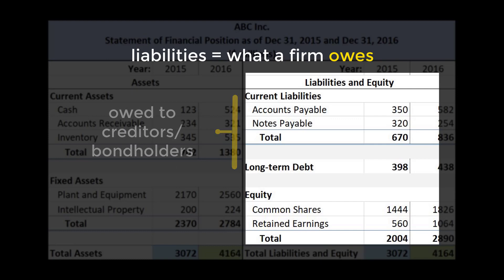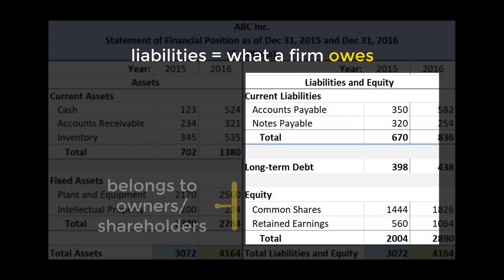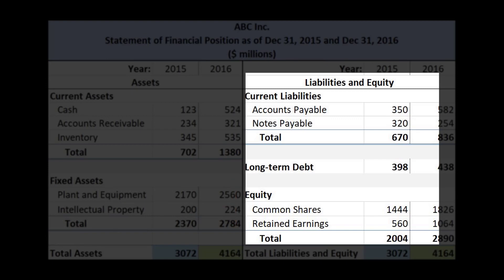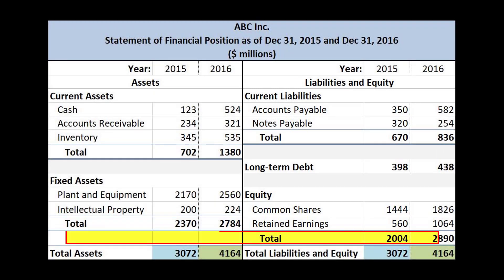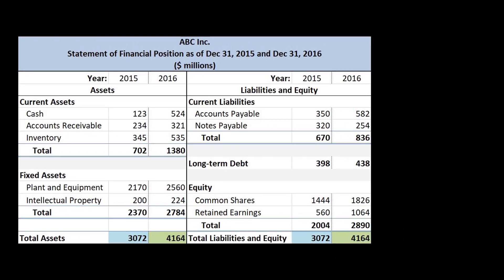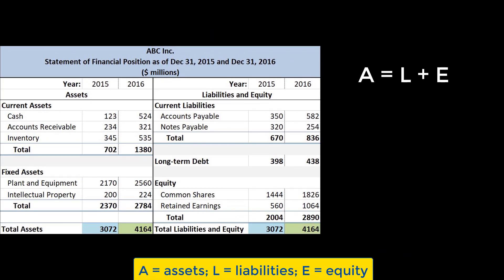Below liabilities is equity. Equity is the amount of funding the owners, or shareholders, put into the company, plus retained earnings from operations. Notice that the totals on both sides are the same. This is because the underlying principle of a statement of financial position is that assets equal liabilities plus equity.